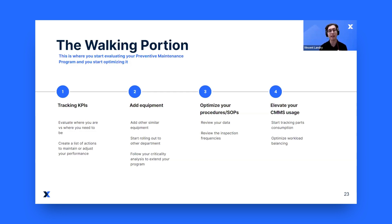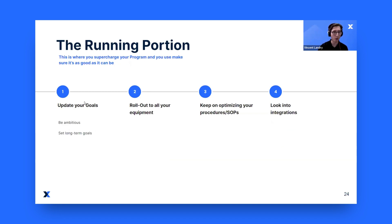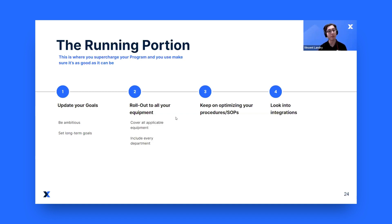Now the running portion — this is where you supercharge your program and make sure it's as good as it can be. It's time to update our goals, and at this point we can be ambitious. Everything worked well so far, so let's set ourselves something ambitious. Make sure that you roll out to all of your equipment and include all departments in your company, so that everything is covered by the PM program.